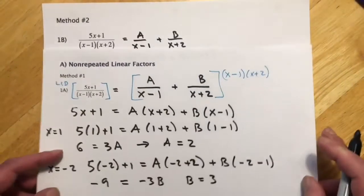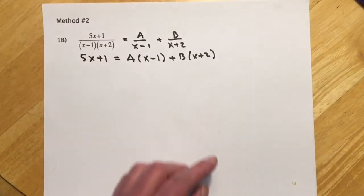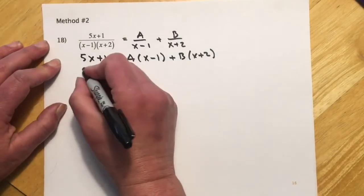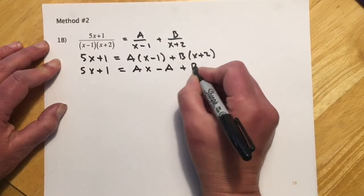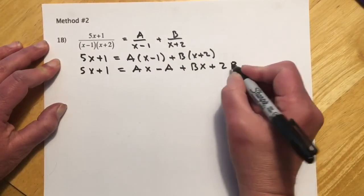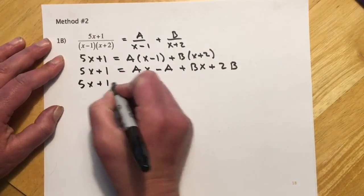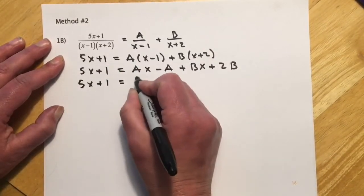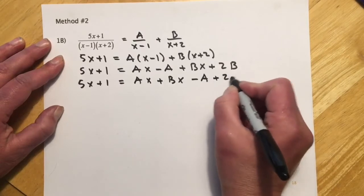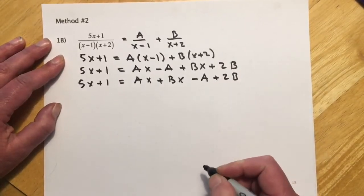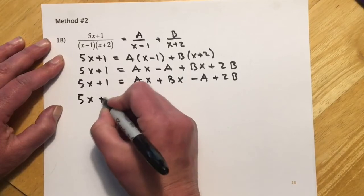So then in this method, in the first method, I left it like that because it was nice because I could see these things would zero out. But in this method I want to distribute. So that's where they change. So this will be 5x+1 equals Ax-A, plus Bx+2B. And then I want to group up my x's and my constants. So that's going to look like 5x+1. Important not to lose that side of the equation. Ax plus Bx. And then minus A, plus 2B. So then what I'll do is, I'm going to factor out an x here.